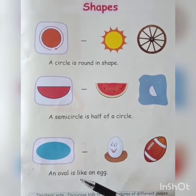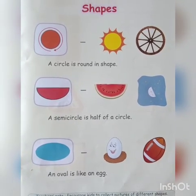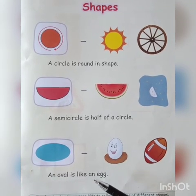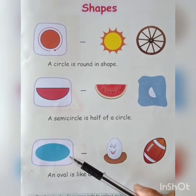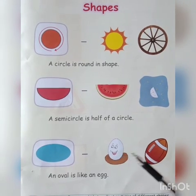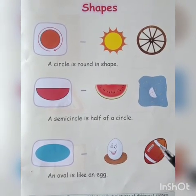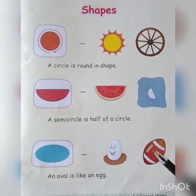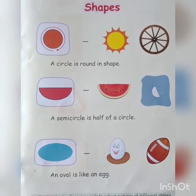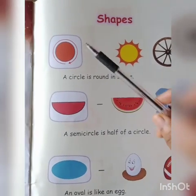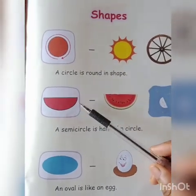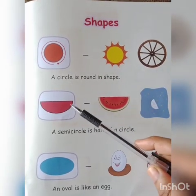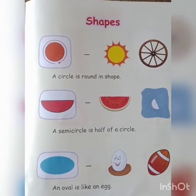And the third one is oval. An oval is like an egg and like a bowl. Circle, semicircle, oval — let's say it again: circle, semicircle, and oval.